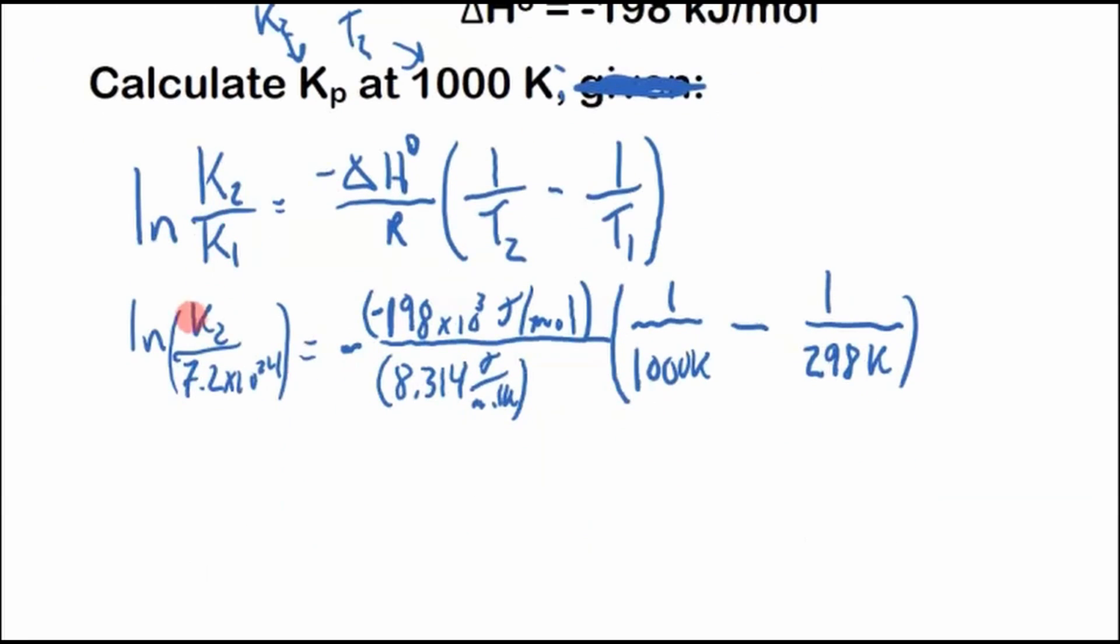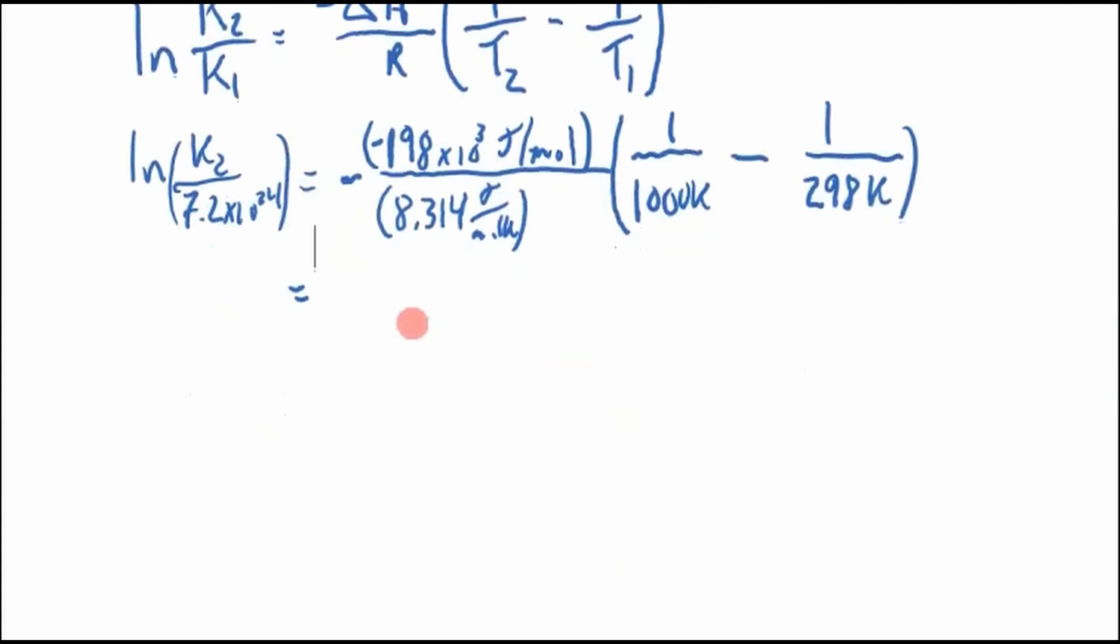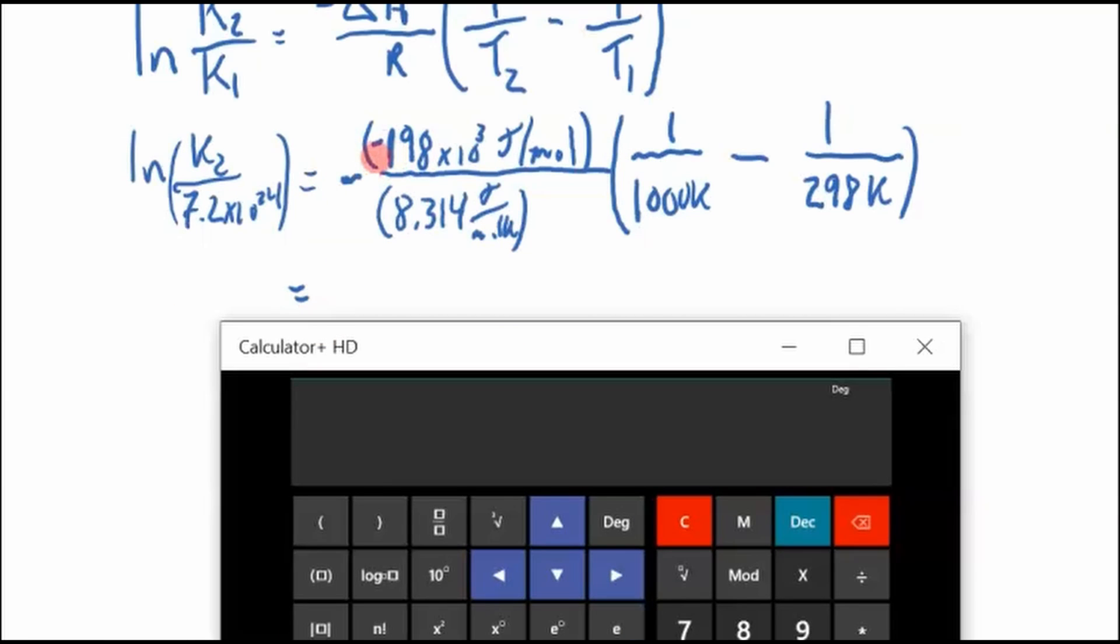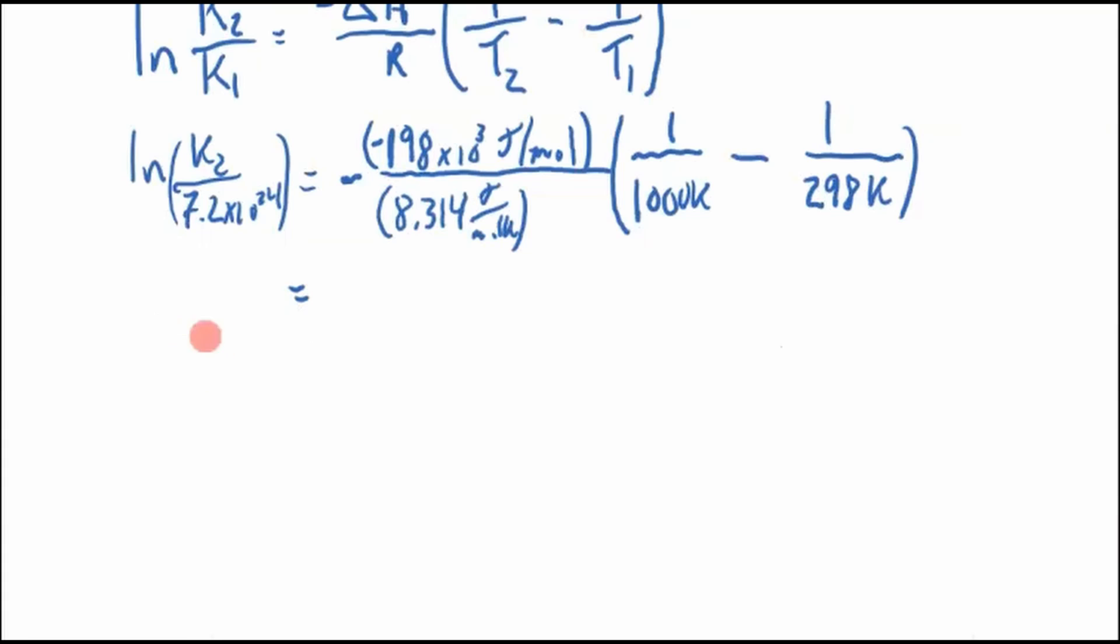I mean we could solve for K2 first, but I'll just plug in the numbers to make it simple. So negative and a negative, that's positive. So 198 times 10^3 divided by 8.314, and that's times bracket (1 divided by 1000 minus 1 divided by 298). Double check, it all looks good. So negative 56.102.